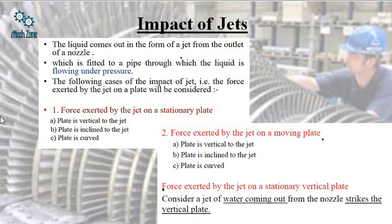That is, the direction between the jet and the plate would be 90 degrees. Second, the plate is inclined to the jet. The plate is inclined to the jet means it is at any angle like theta. Third is the plate is curved if it is having a curved shape.